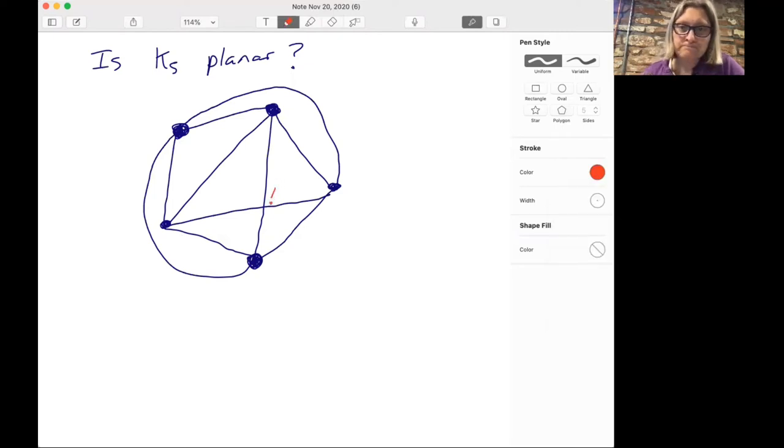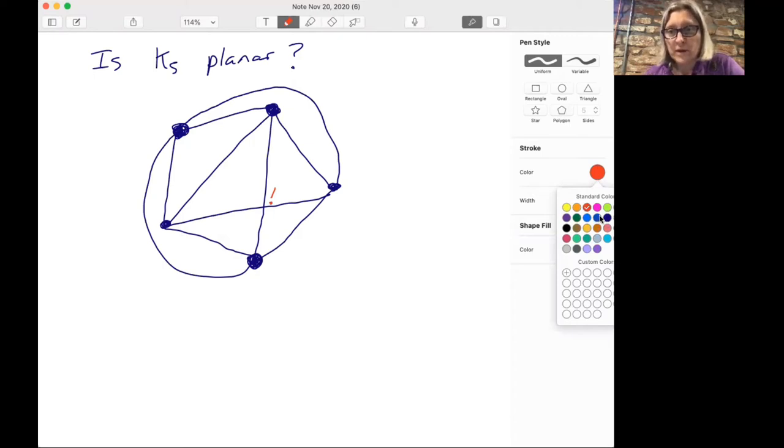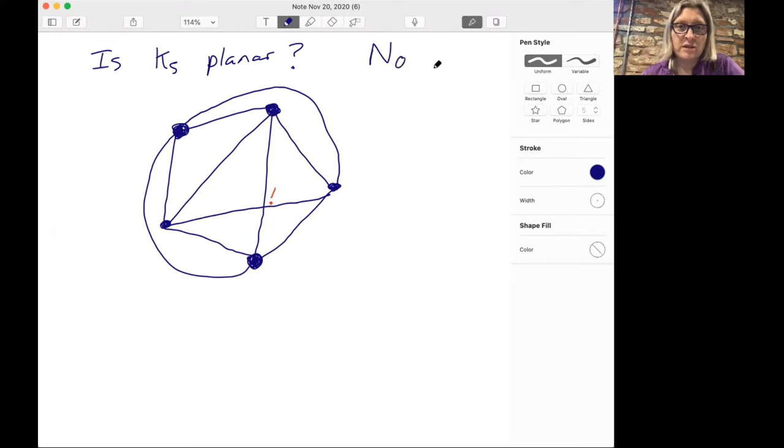And there's really no way of doing that without either crossing this edge or without crossing this edge. So I can't really figure out how to do this without this intersection point here. And so we will see later on that as much as you try, it is not possible to do this. So K5, the answer is no. No matter how well you try to draw K5 on a piece of paper, you're always going to have crossing edges.